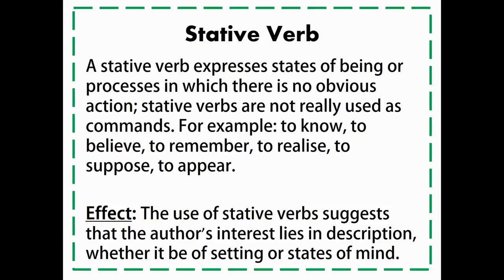A static verb is different to a dynamic verb. A static verb expresses states of being or processes in which there's no obvious action. Static verbs are not really used as commands. For example, static verbs include: to know, to believe, to remember, to realize, to suppose, to appear. They're almost abstract forms of verbs. The use of static verbs suggests that the author's interest lies in description, whether it be of setting or state of mind.